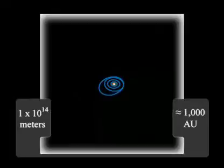If we go out 1,000 astronomical units from the Sun, or 10 to the 14 meters, then the solar system gets smaller as we increase our distance from it.